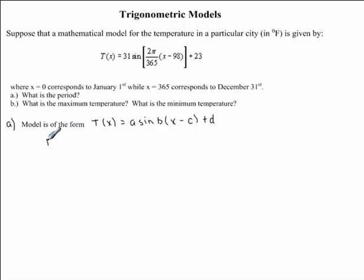Now, our period is equal to 2π divided by b. This is the general formula. Looking at our trigonometric model, you will notice that 2π/365 represents our b variable.